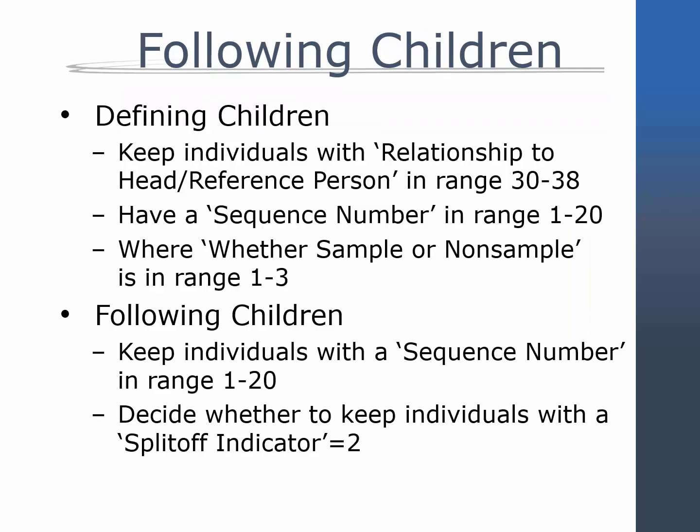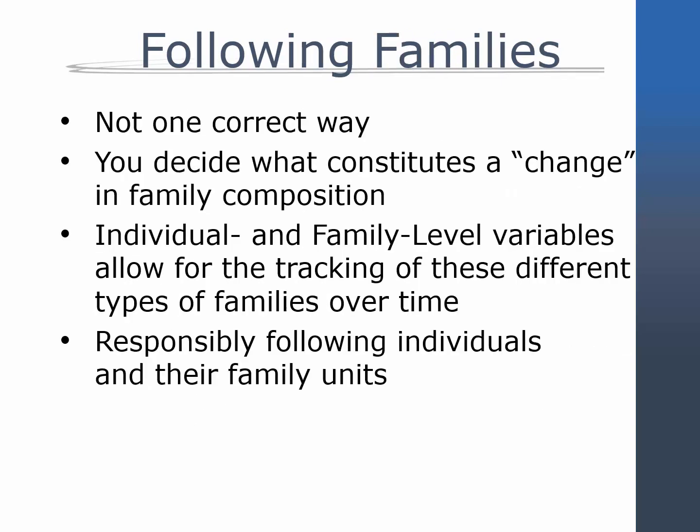To summarize, in order to follow children, keep individuals in the baseline year with a relationship to head or reference person in the range of 30 to 38 and a sequence number in the range of 1 to 20. To be followable, they must also be sample members, as defined with a value of 1 to 3 for the summary variable whether sample or non-sample. When it comes to following families longitudinally in the PSID, there isn't one correct way to do it. Each researcher needs to decide how they wish to define a family and specify which differences in family composition constitute a change in that definition. From there, it is a matter of using the identification variables in each wave to track individuals appropriately in order to create a sample of individuals in family units for the specified time period of interest.